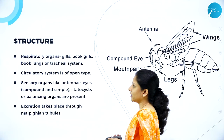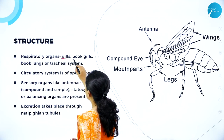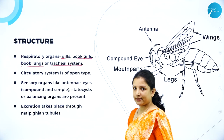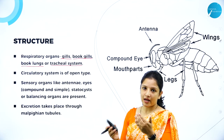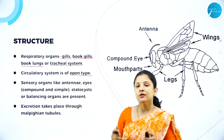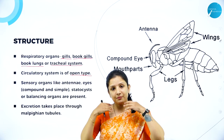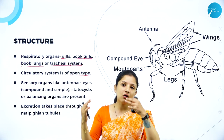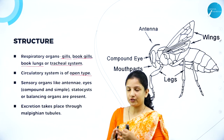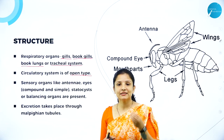Arthropods have organ system level of organization. Respiratory organs can be gills, book gills (for example in prawns), book lungs, or a tracheal system for breathing, where the trachea acts like a windpipe carrying air. They have an open type circulatory system, meaning the heart doesn't have arteries, veins, or capillaries to carry blood to specific organs. Instead, blood comes directly out of the heart and bathes all the organs — there is no pipe system.